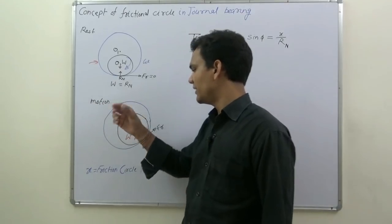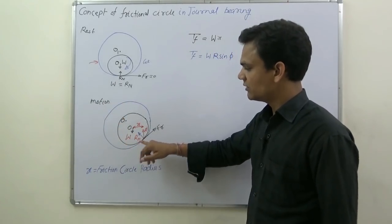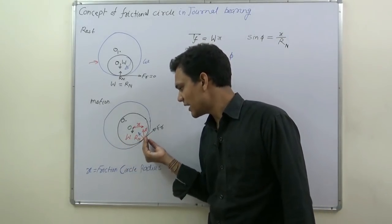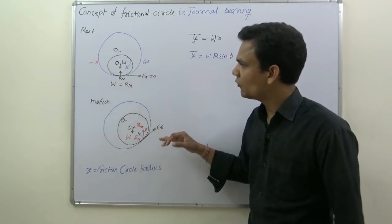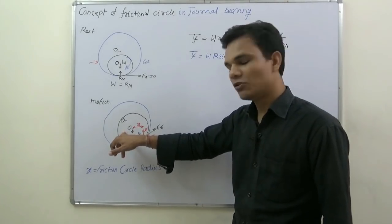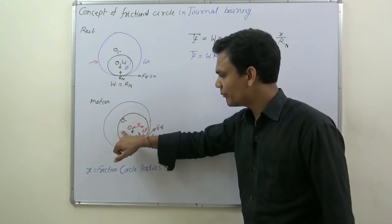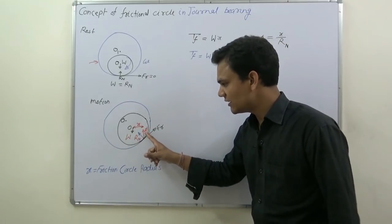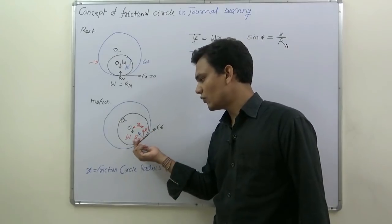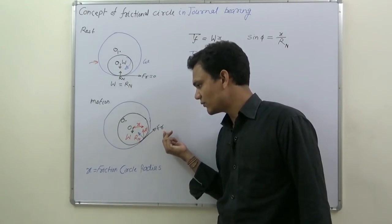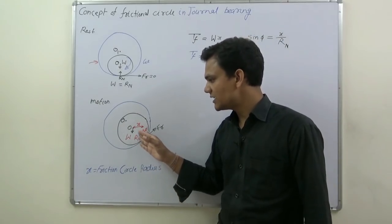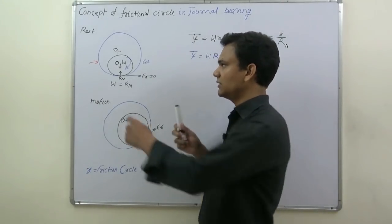When the motion of the shaft starts, friction comes into the picture. Due to this, the shaft shifts towards the right and the line of action of the normal reaction and the load no longer remain the same. When friction comes into the picture, R-dash is introduced, which is the resultant of the normal reaction of the bearing and the friction force.